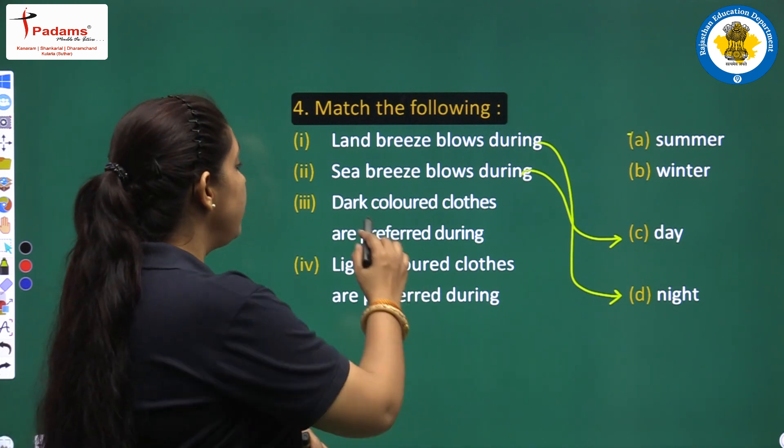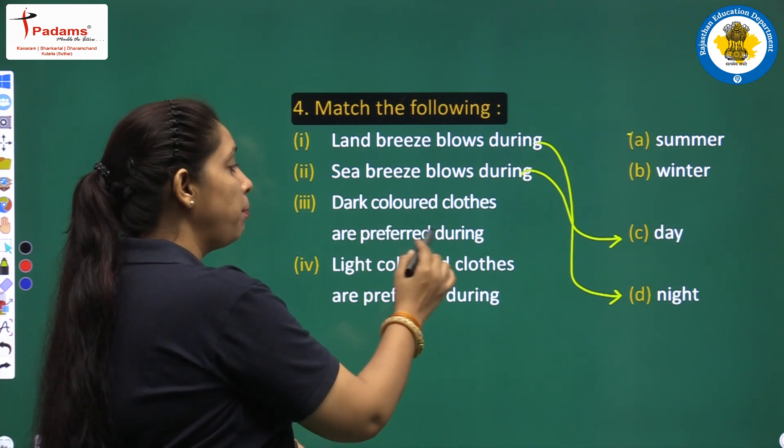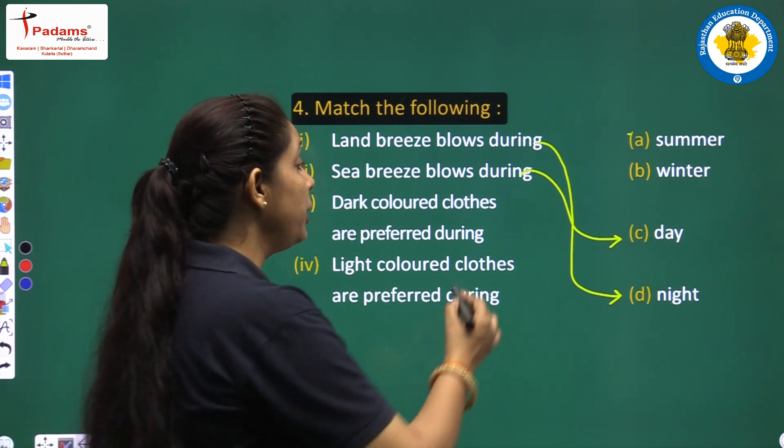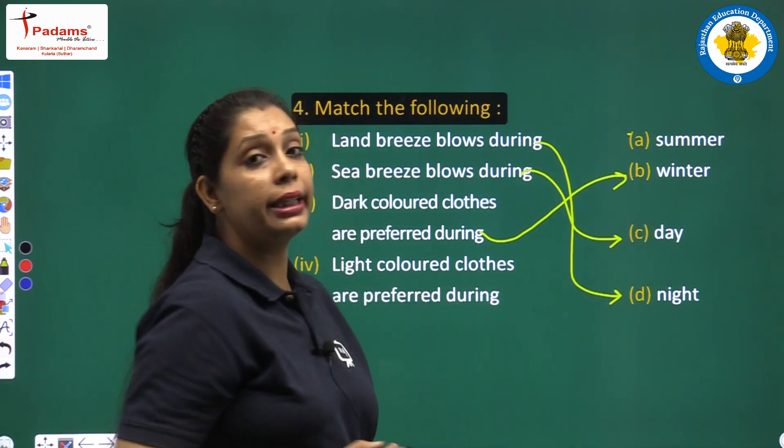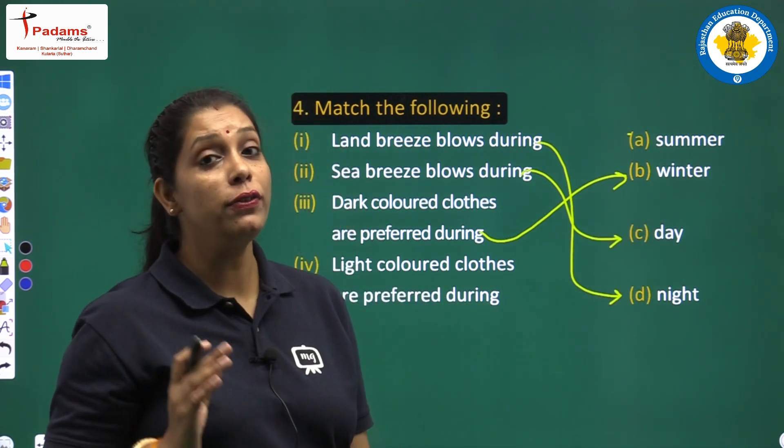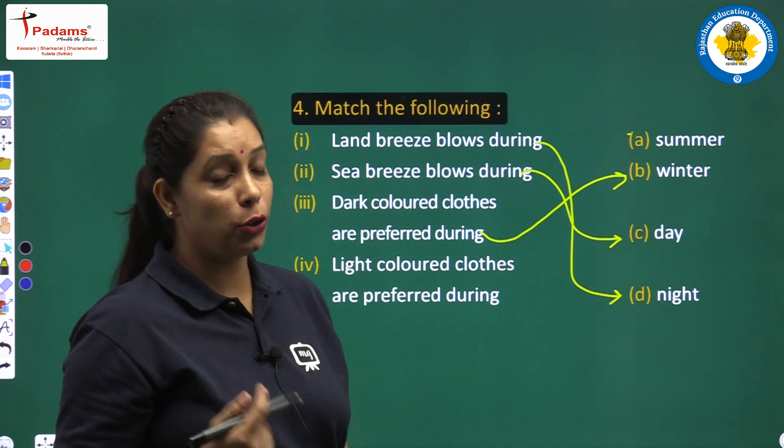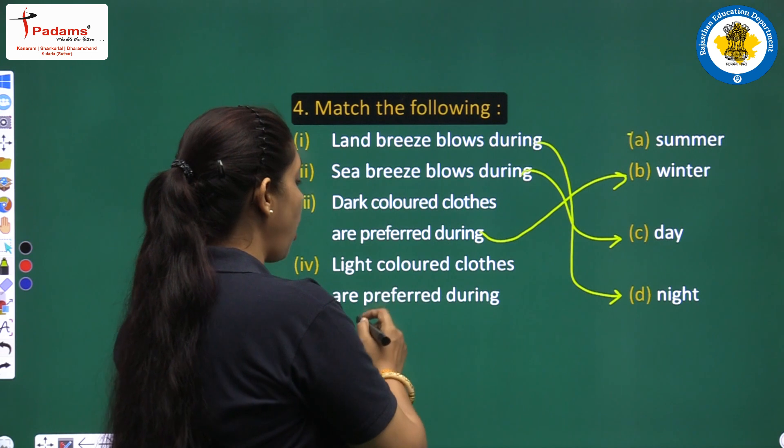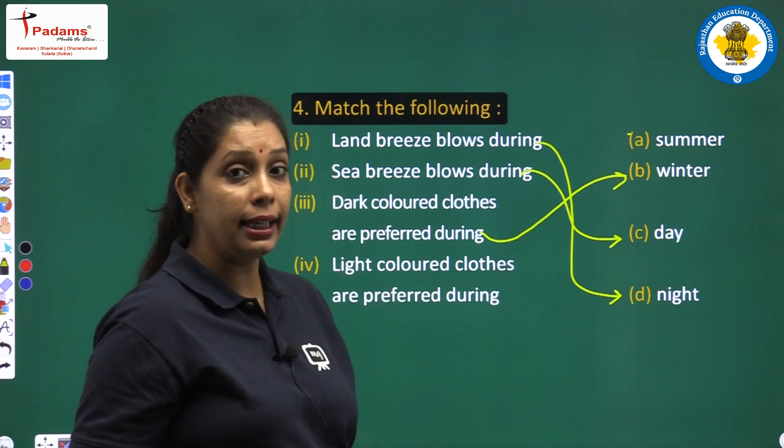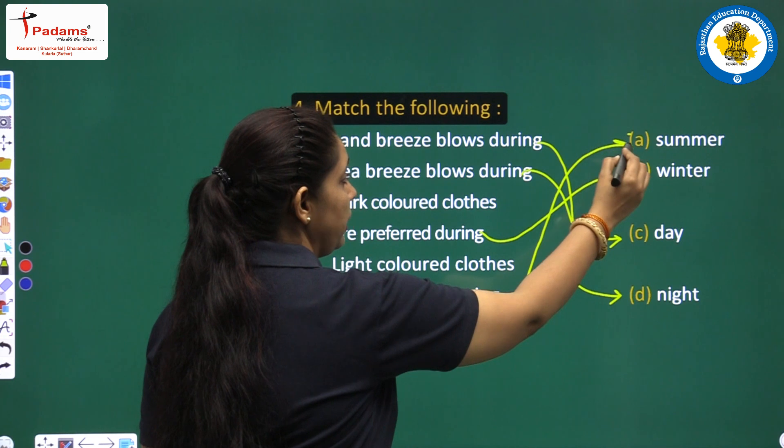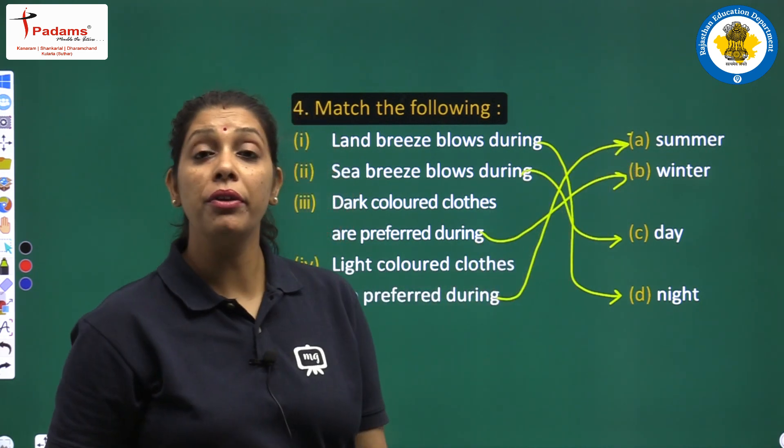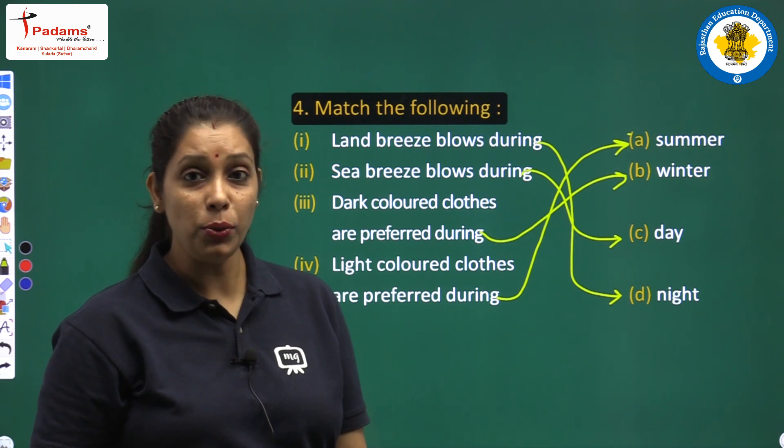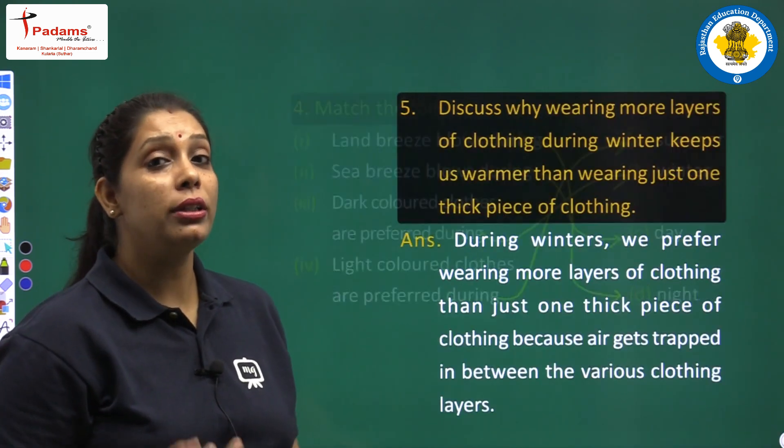The next one: dark colored clothes are preferred during winter season because they are good absorber of heat and in winters we need heat. Light colored clothes are preferred during summers because they are good reflectors. They reflect heat.